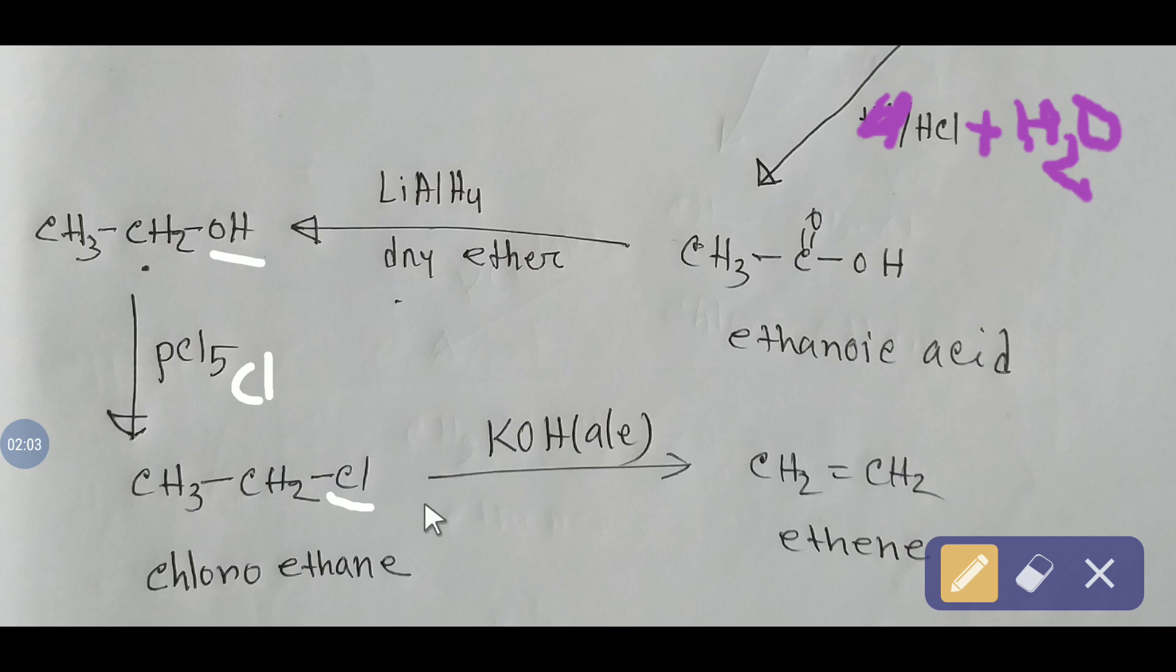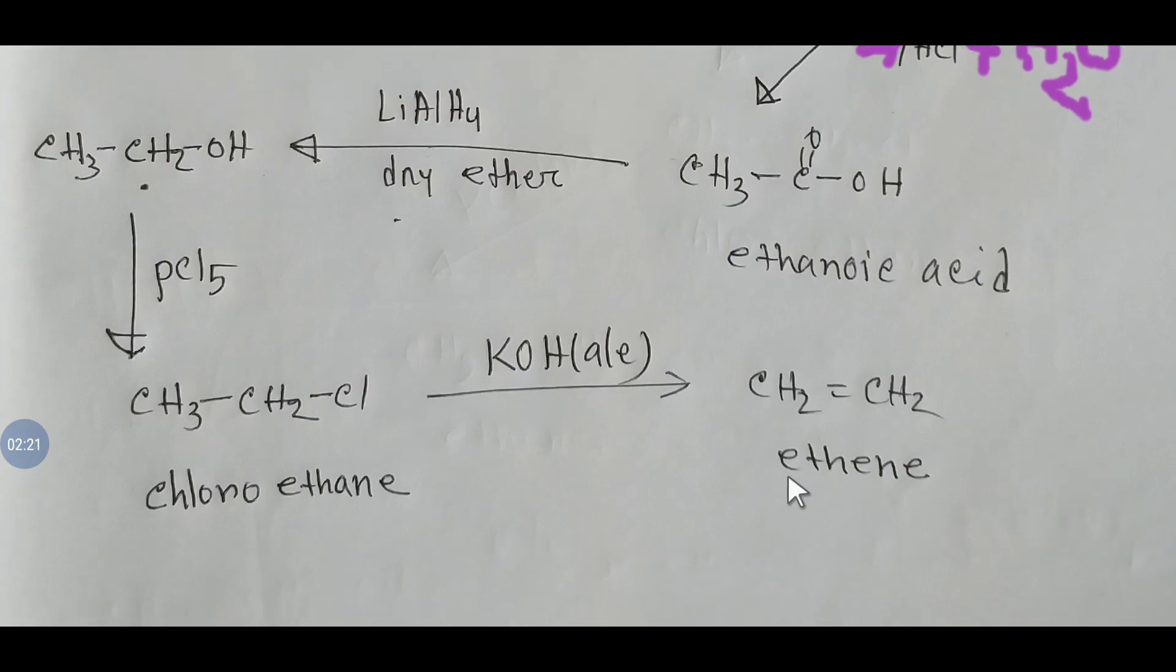If you add alcoholic potassium hydroxide, the chlorine will take hydrogen from the adjacent carbon, and a double bond will form. You will get ethene as the final product.